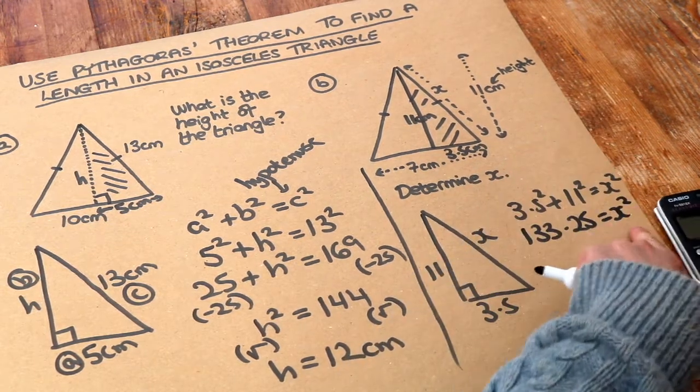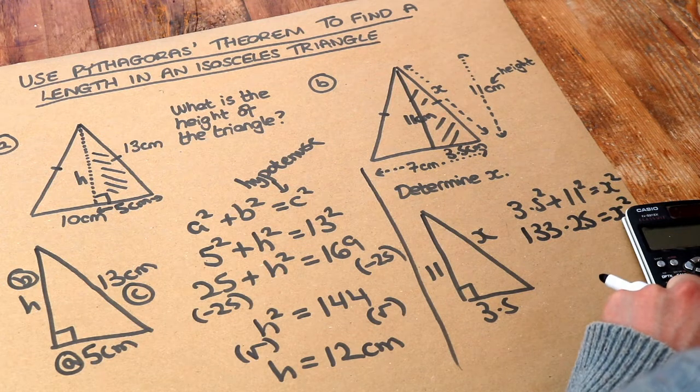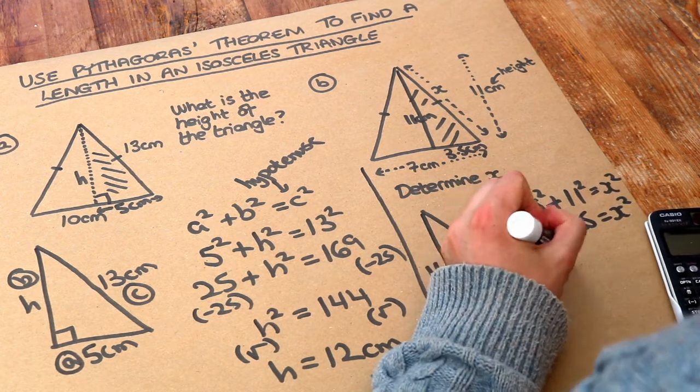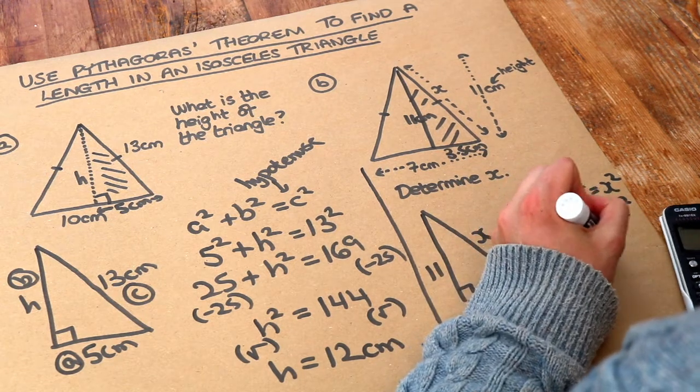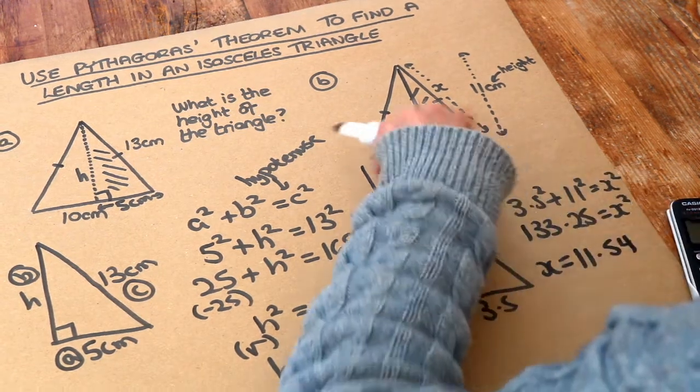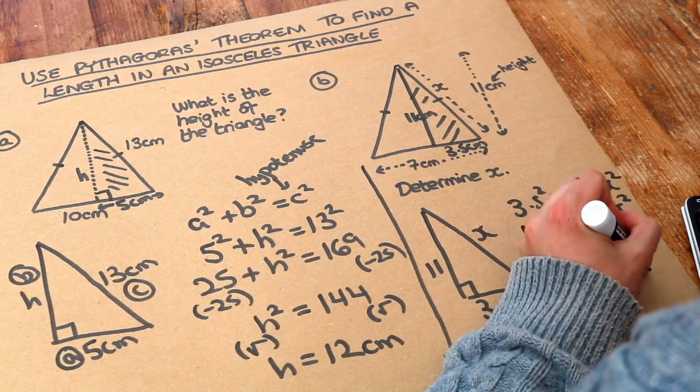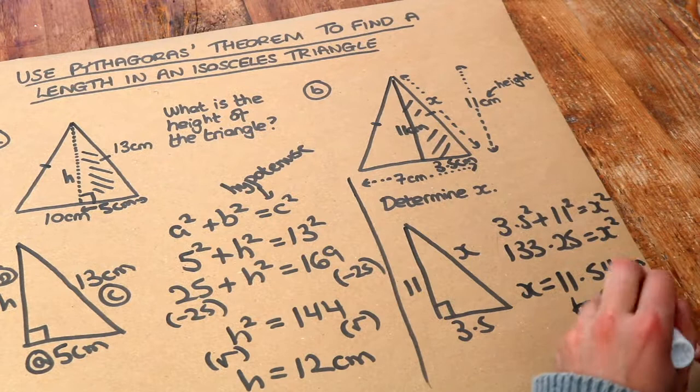To get rid of that squared on the x, we just square root that. Square root of 133.25 gives us 11.54 centimeters. That was to two decimal places. I could have also given it to three significant figures. That is the final answer.